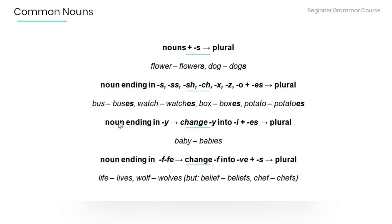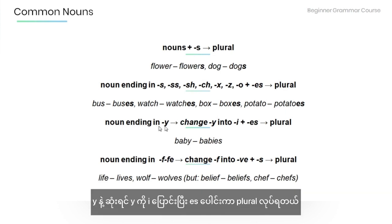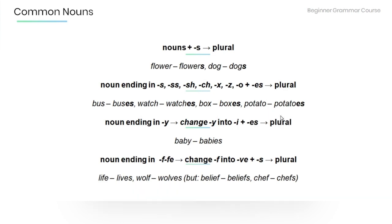Nouns ending in Y change into I plus ES when we want to make a plural. For example: baby → babies.